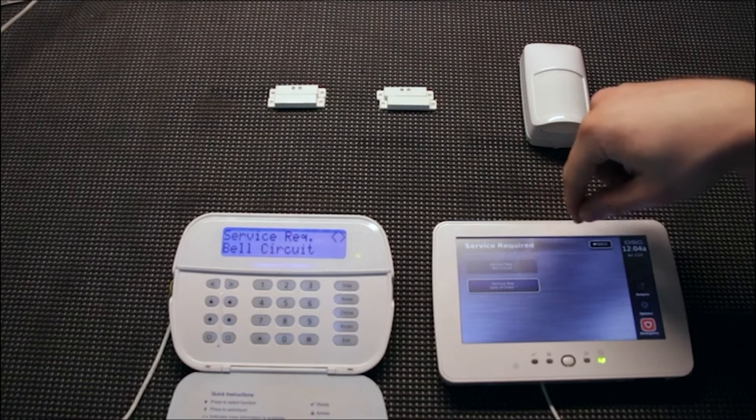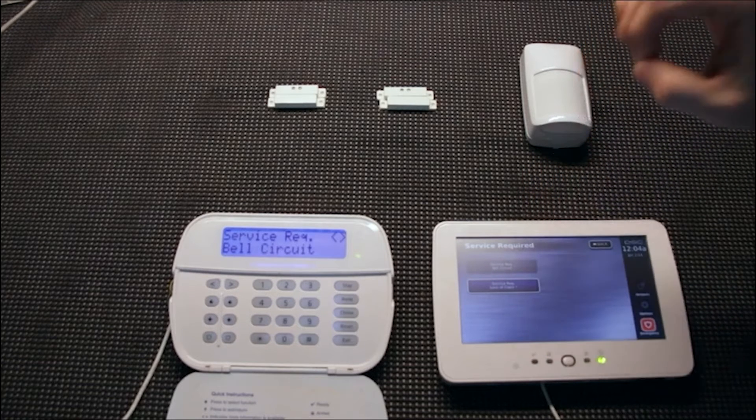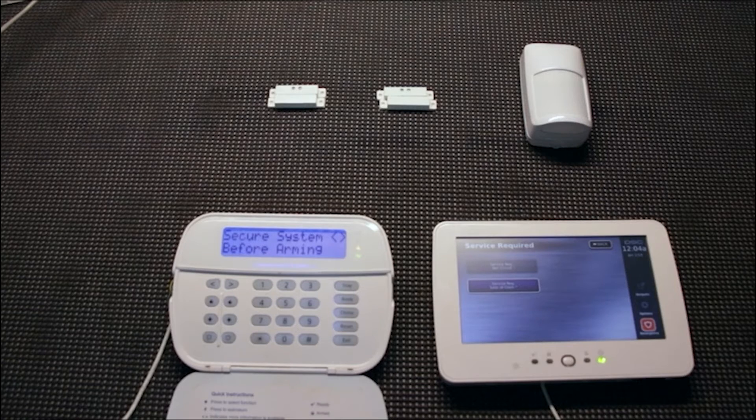So for the bell circuit what that means is it's not reading a siren hooked up to the system. So let's jump over to the panel and I'm going to use a resistor in place of the siren because we don't want a siren going off in the shop.